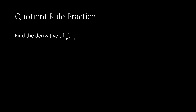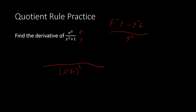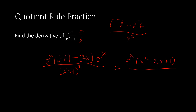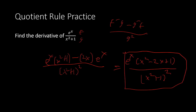Now we find the derivative of e^x / (x² + 1). Writing the formula in the corner: f'g − g'f over g². Here f is e^x and g is x² + 1, so g² = (x² + 1)² goes on the bottom. f' is e^x, times g which is x² + 1, minus g' which is 2x, times f which is e^x. Our final answer simplifies to e^x(x² − 2x + 1) / (x² + 1)².